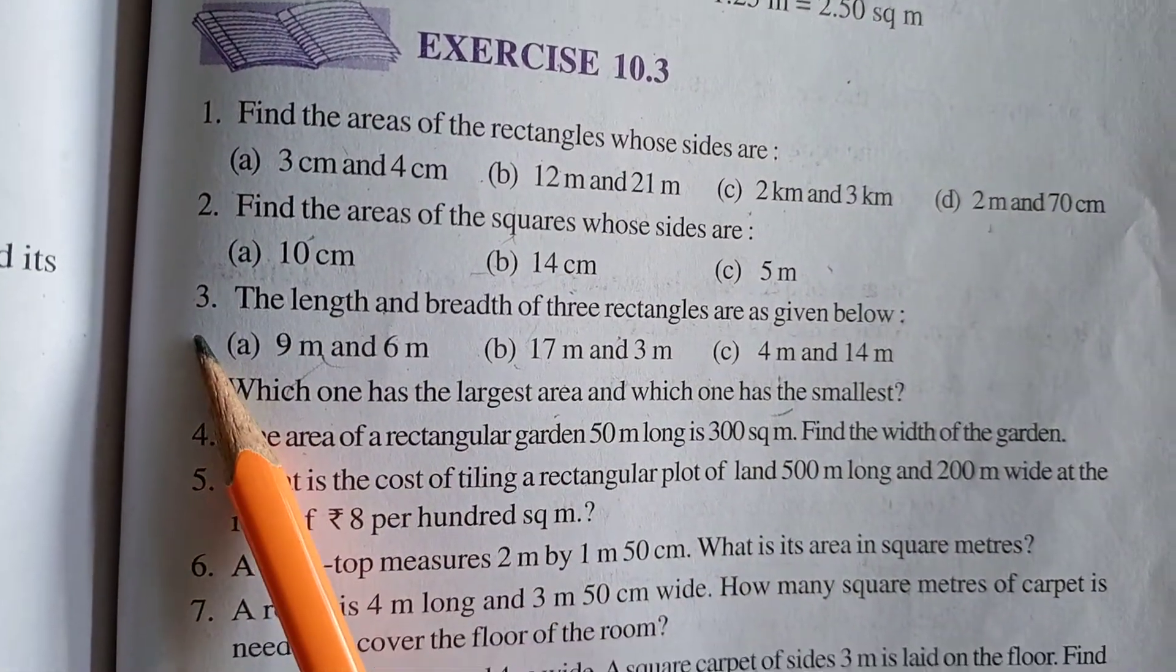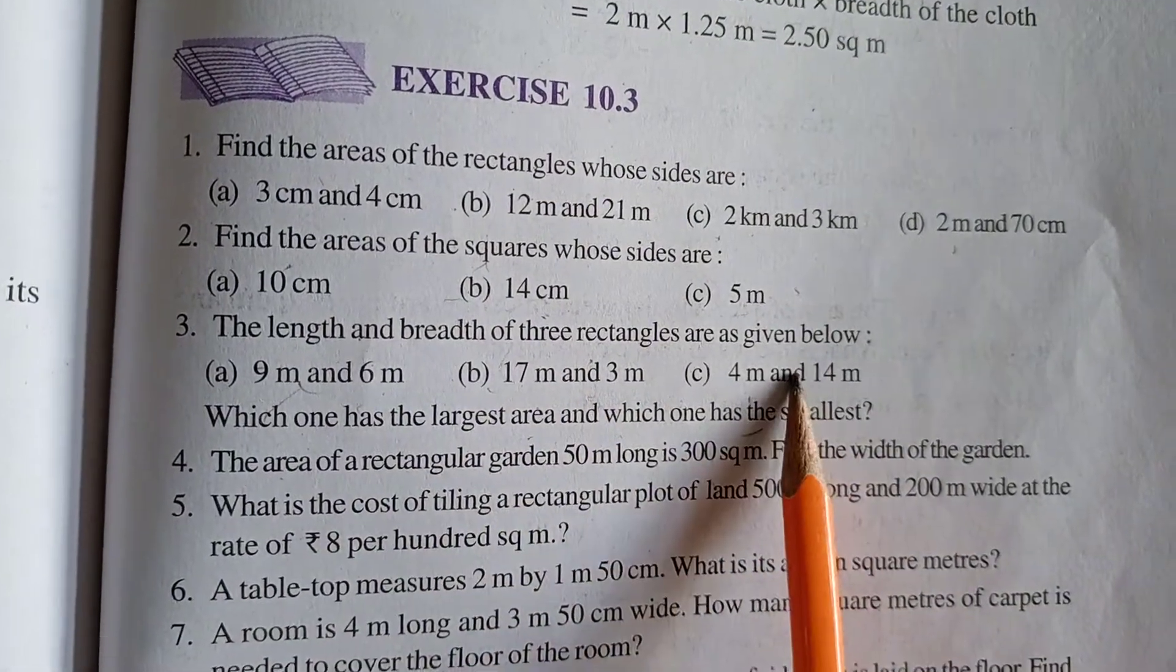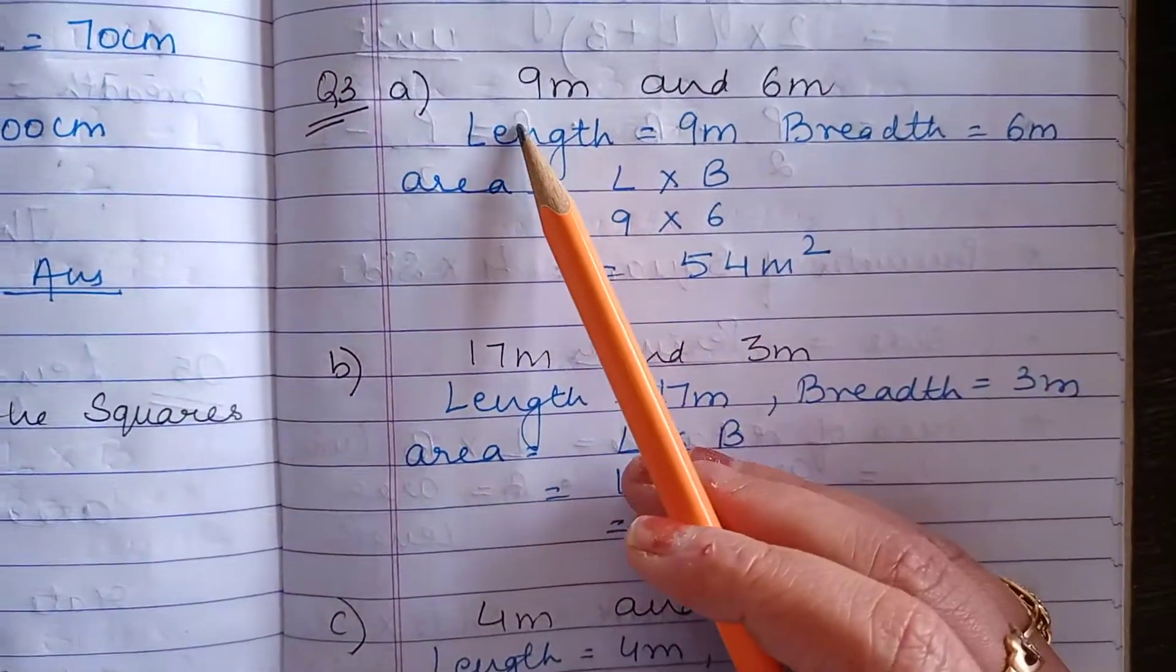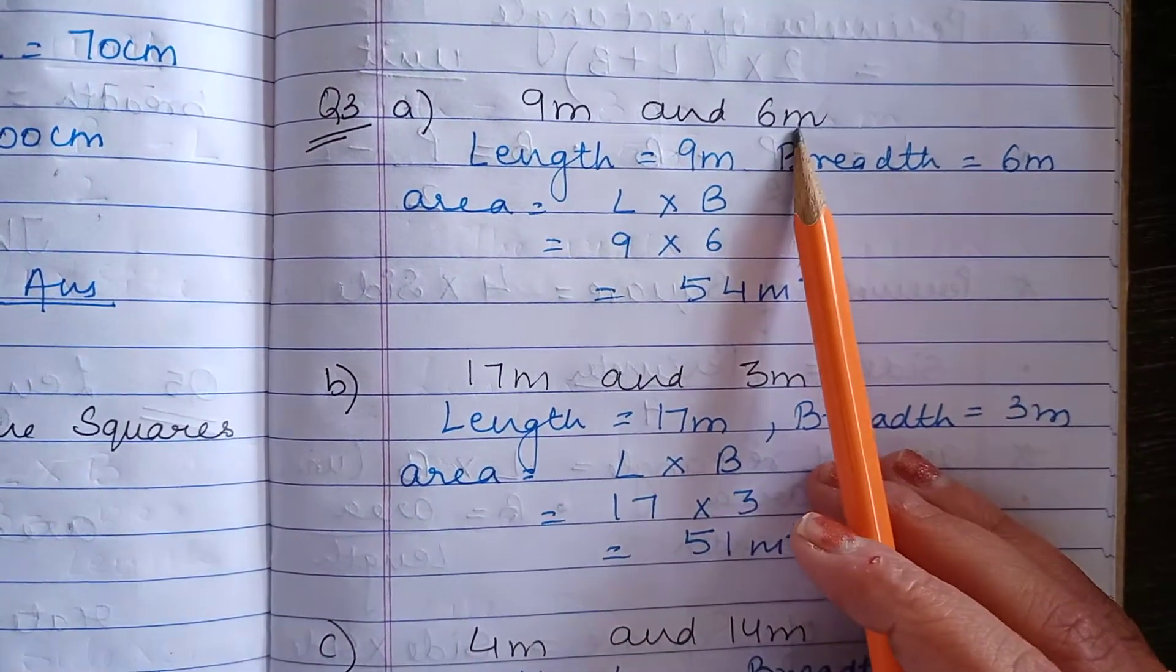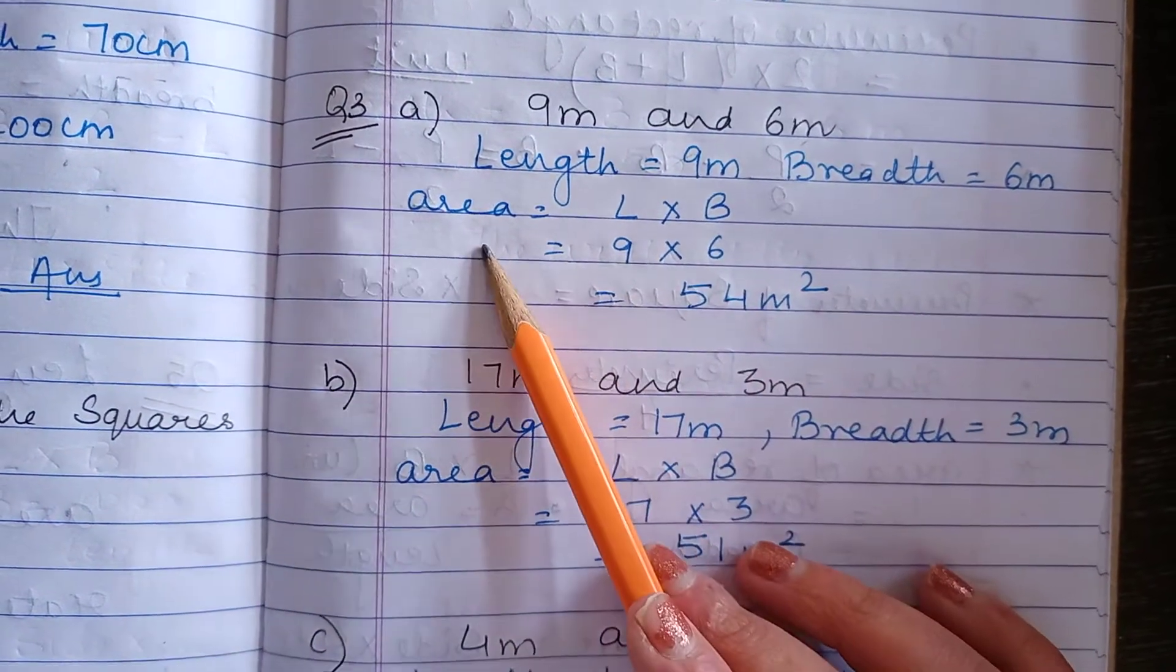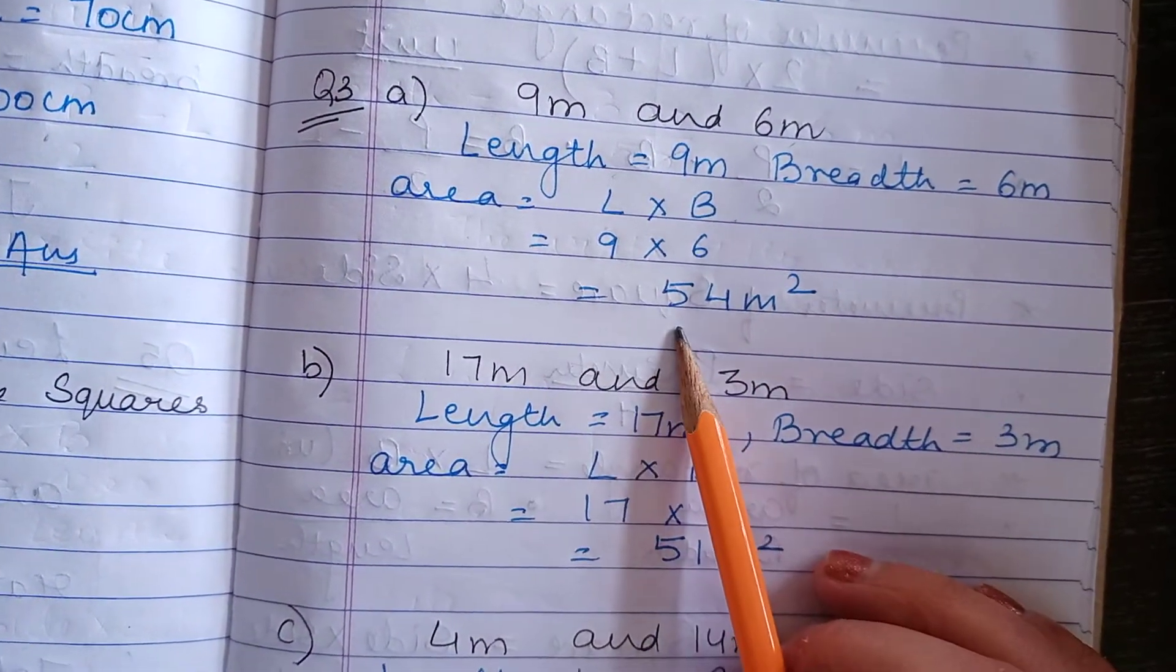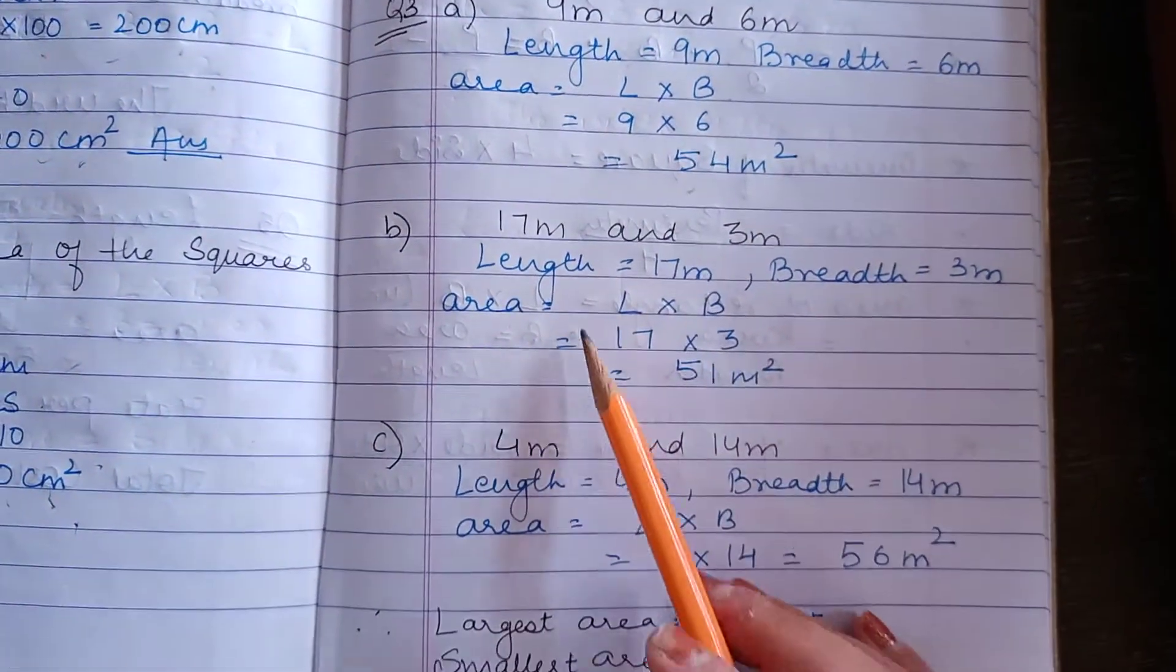Now this is only one question. We have to find area separately but it will be considered as one question only. Now here in part A, 9 meter and 6 meter is given. We have to find the area. Formula is length into breadth. Multiply both, you will get the answer. Same goes for part B also.